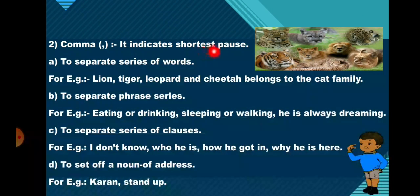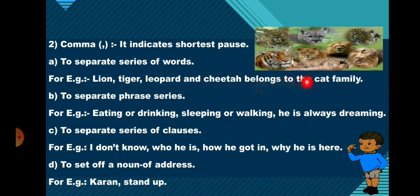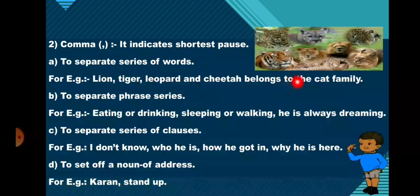Next, the comma. It indicates the shortest pause. It is used to separate a series of words. For example: Lion, Tiger, Leopard, and Cheetah belong to the cat family. So here, in order to separate a series of words, we have to put a comma in between.